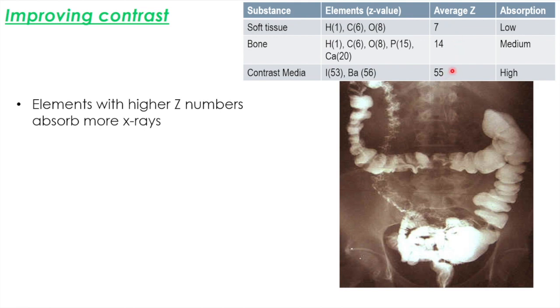But because the z difference is way, way bigger here, the bones barely show up at all. But we do get this perfect image of their intestines. So that's the main way that they can improve contrast.